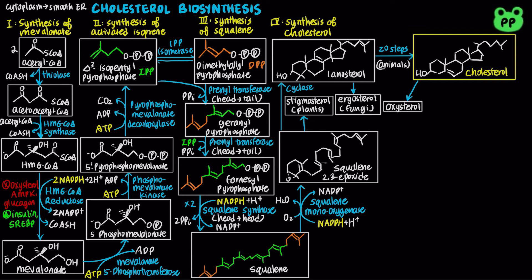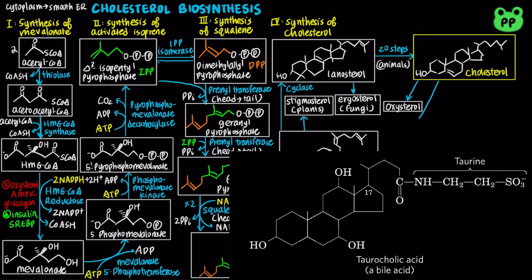Cholesterol serves as a precursor to many biomolecules. Cholesterol can be converted to bile acids, which serve as emulsifiers in the intestine, converting large particles of fat into tiny micelles, greatly increasing the surface area at which digestive lipases can act.